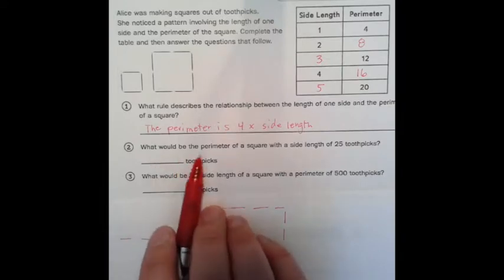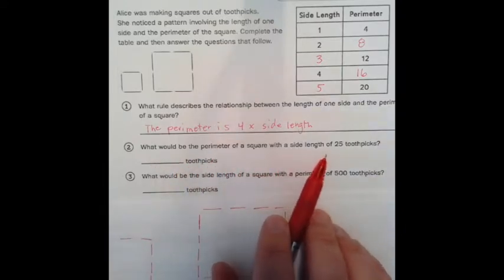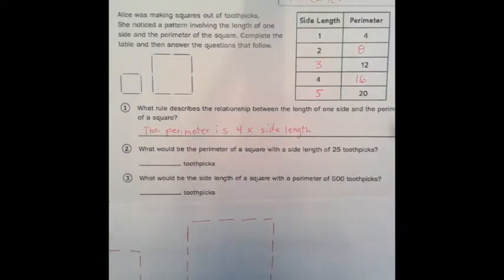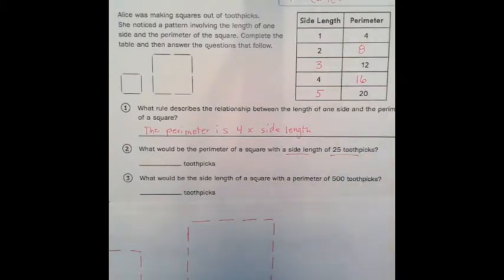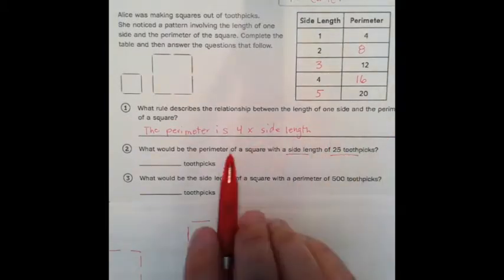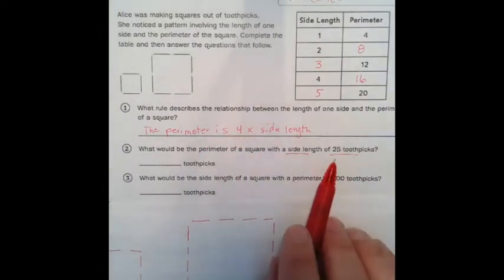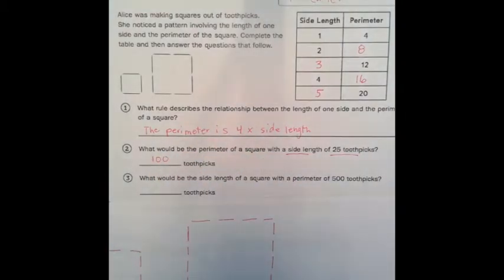So what would the perimeter of a square with a side length of 25 toothpicks be? Okay, so let's try to figure that out. So if we have one side that's 25 toothpicks long, we know that our rule is the perimeter equals four times the side length. So if we go four times 25, that would mean that you would have 100 toothpicks on total for your perimeter.